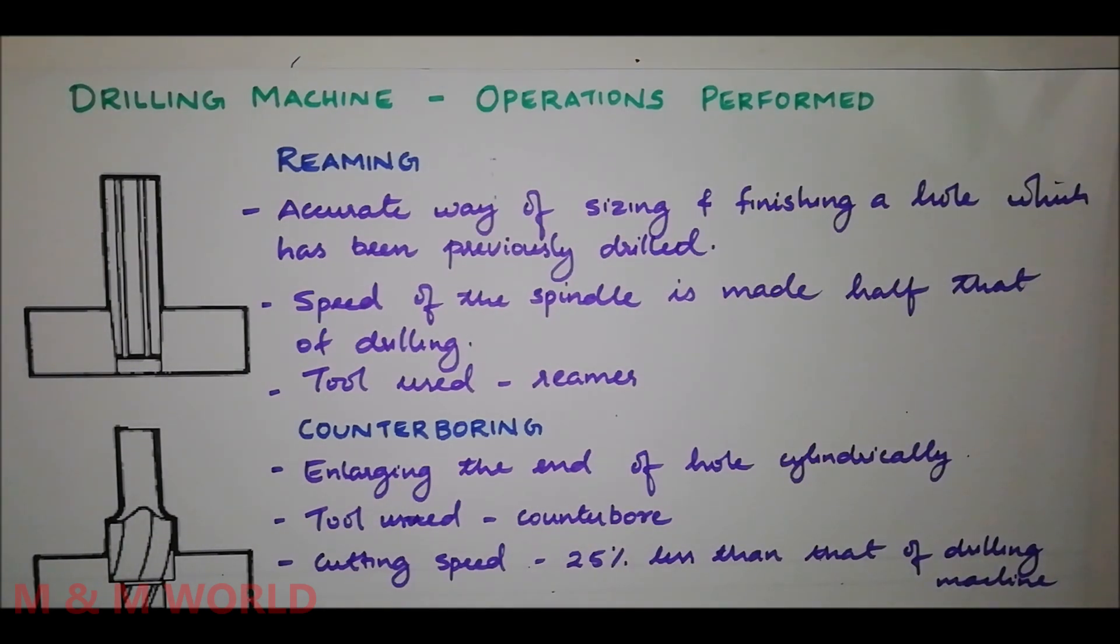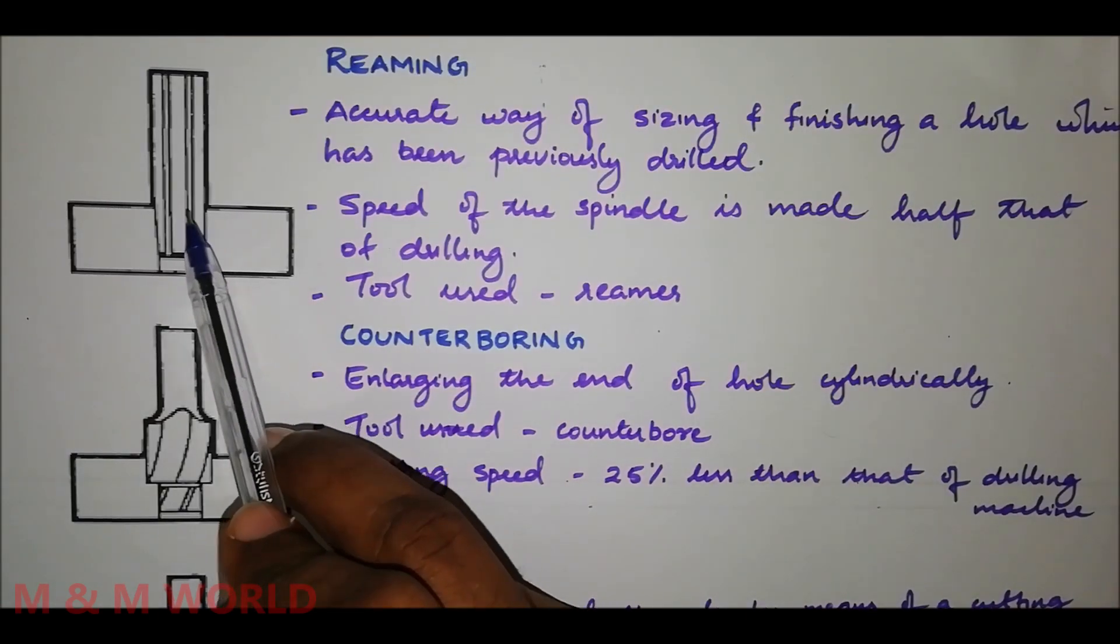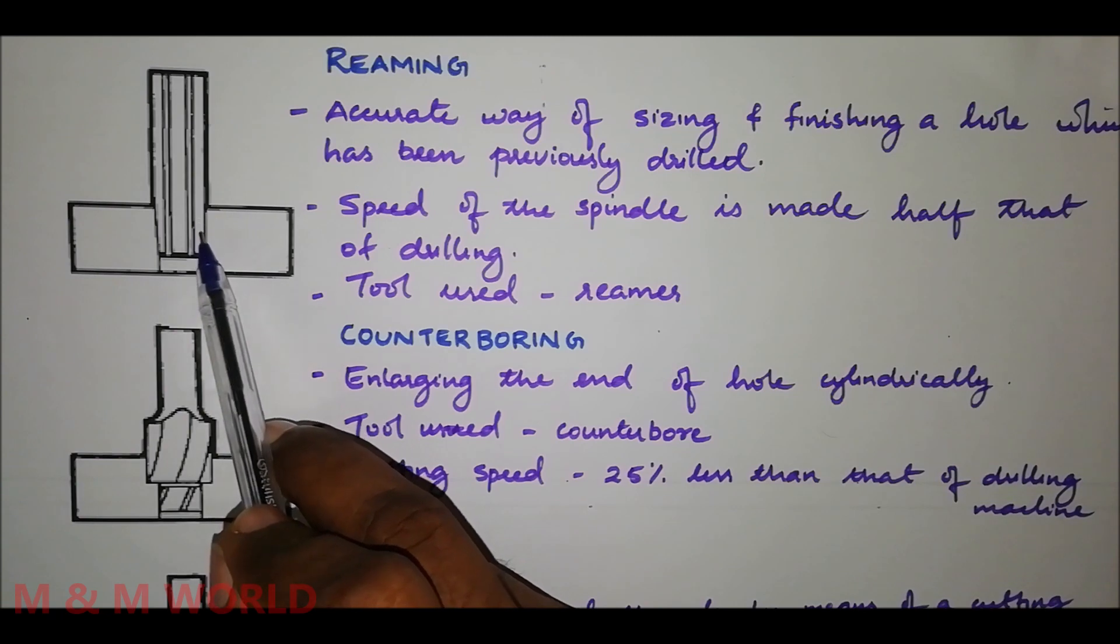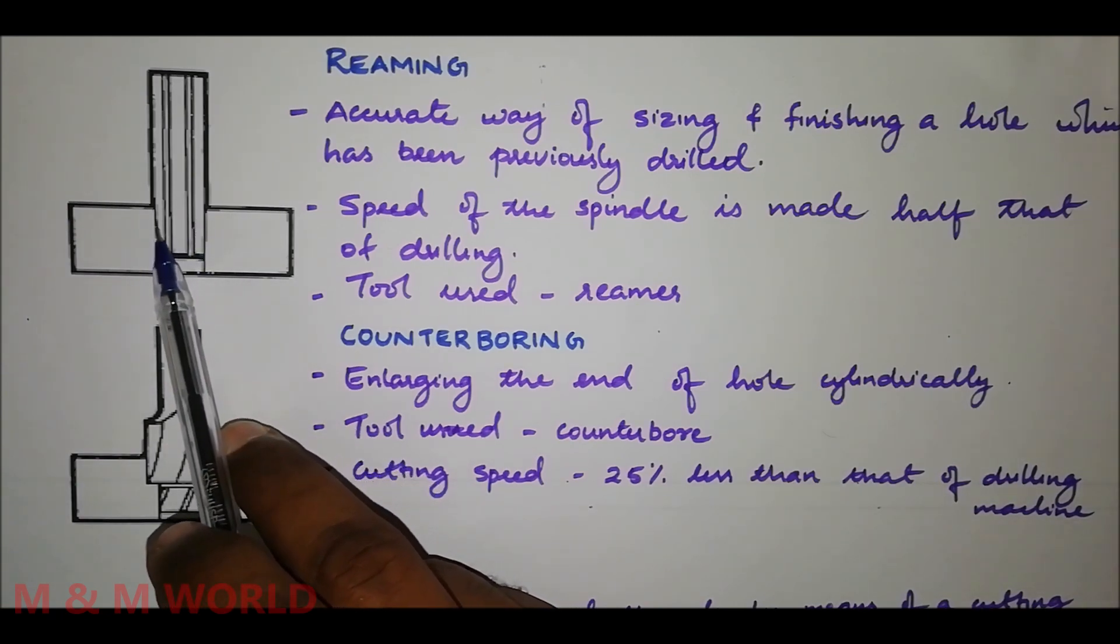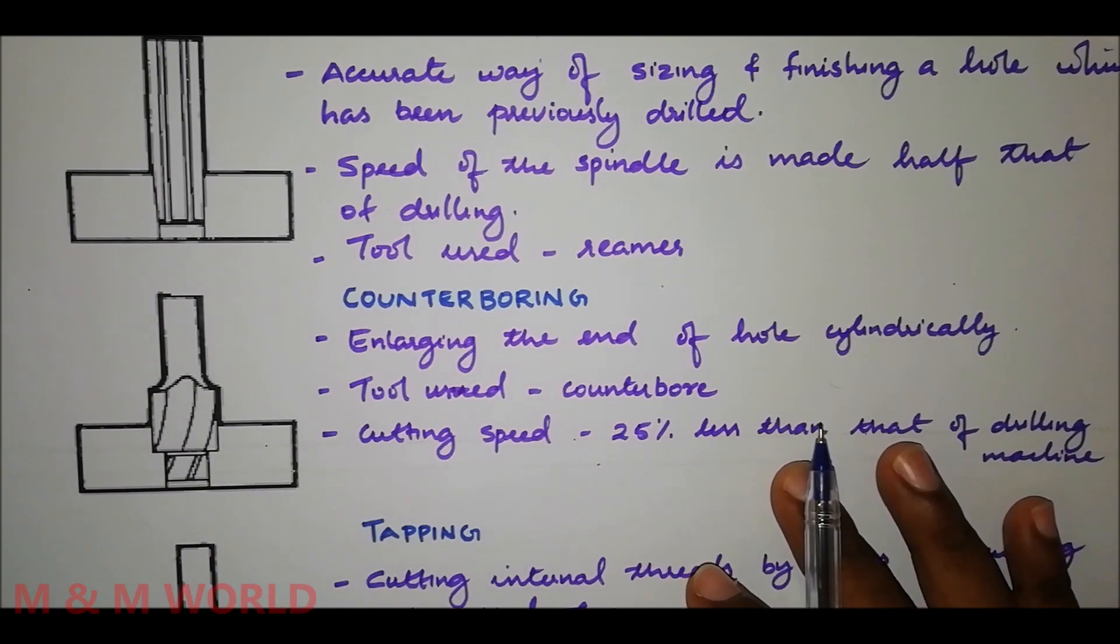Reamer cannot originate a hole. It follows the path which has been previously drilled and removes a very small amount of material using this tool.